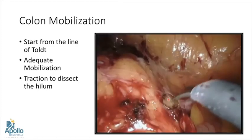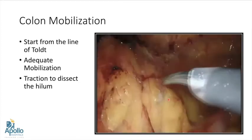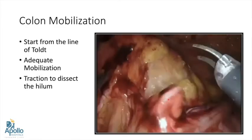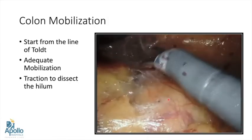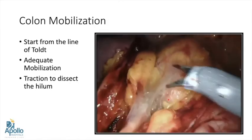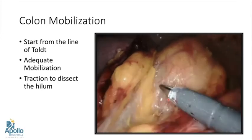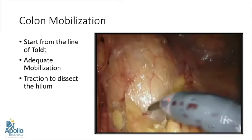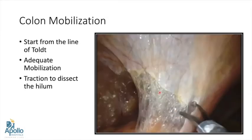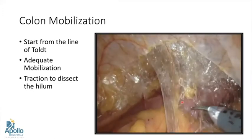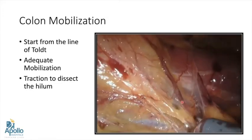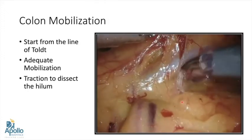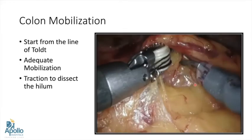The first step in partial nephrectomy is colon mobilization, starting from the line of Toldt. On the right side, mobilize from the hepatic flexure to the iliac vessels; on the left, from the spleen to the iliac vessels, so the spleen falls like an open book. Traction on the bowel opens up the plane, making dissection much easier. Lifting the lower pole fat demarcates the ureter.